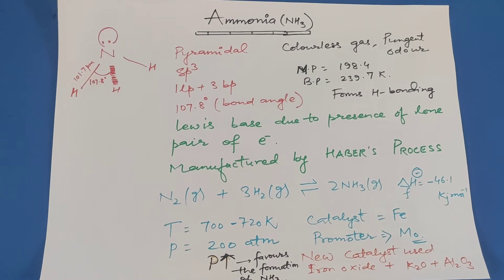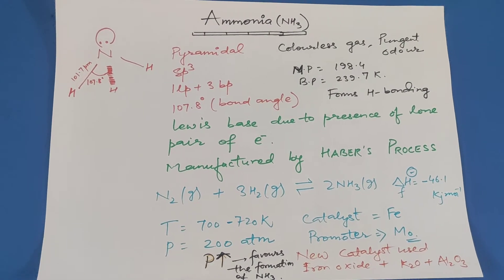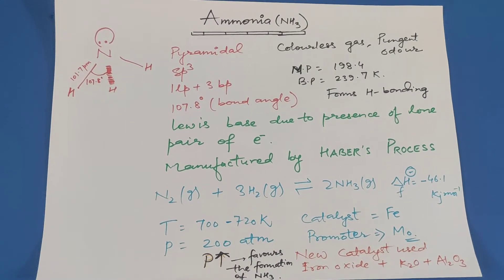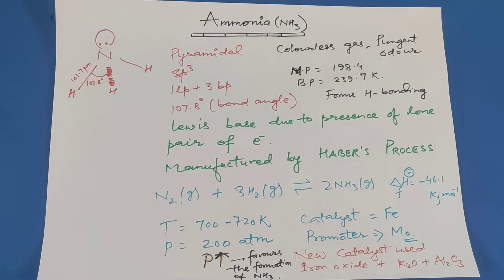It is a colorless gas with pungent odor. Melting point is 198.4 Kelvin. Its boiling point is 239.7 Kelvin. It forms hydrogen bonding.